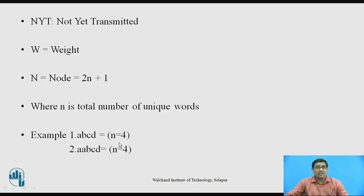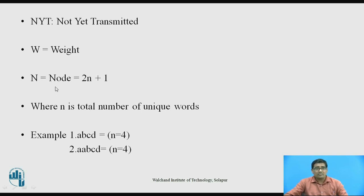Consider another example: A, A, B, C, D. Here N is not 5. Why? Because the two A's are counted as one unique symbol. So A is 1, B is 2, C is 3, D is 4 — therefore N equals 4 here as well. For both examples, the capital N (node count) becomes 2N plus 1, that is 2 times 4 plus 1, which equals 9.